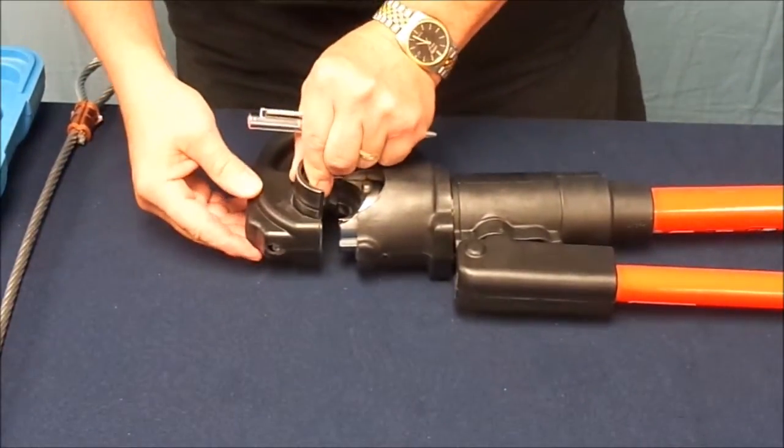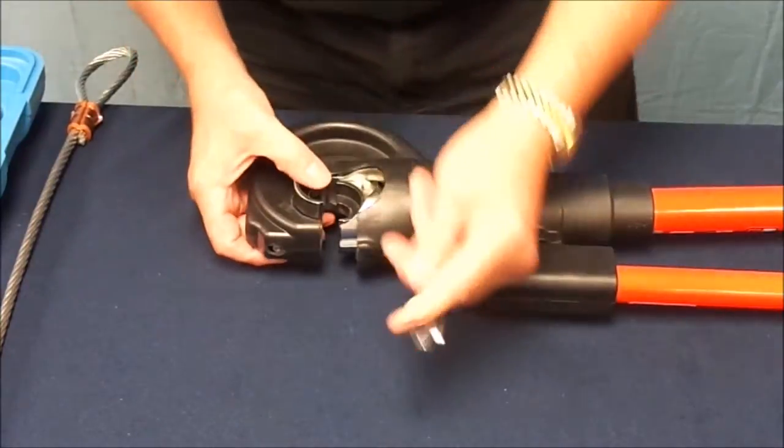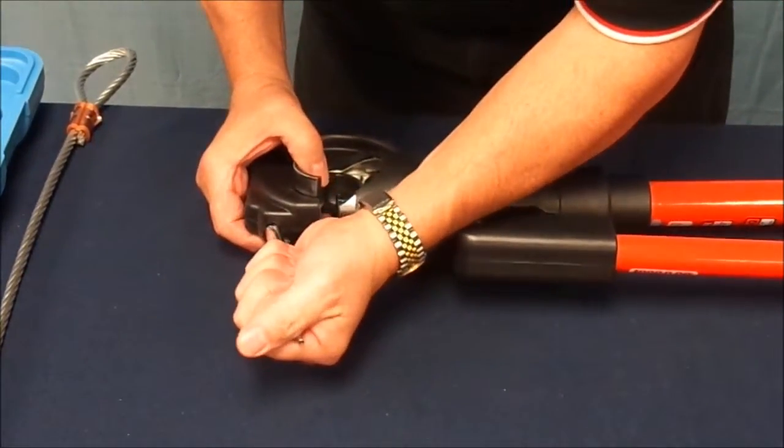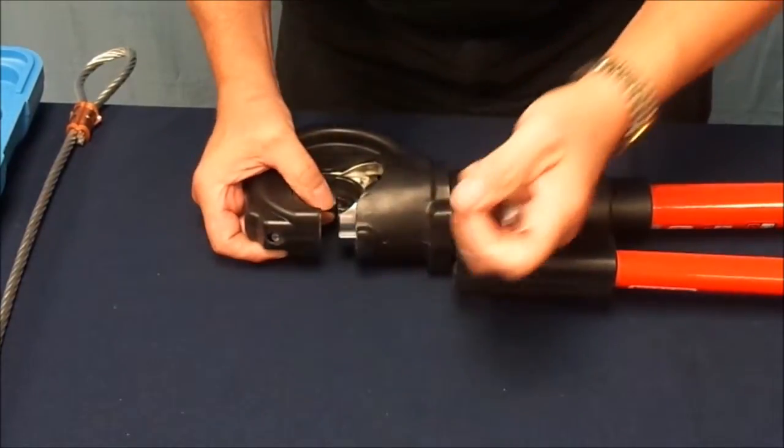To install the die in the upper part of the jaw, press the die release button on the head as shown, and insert the die into the jaw. Center it and release the pin.